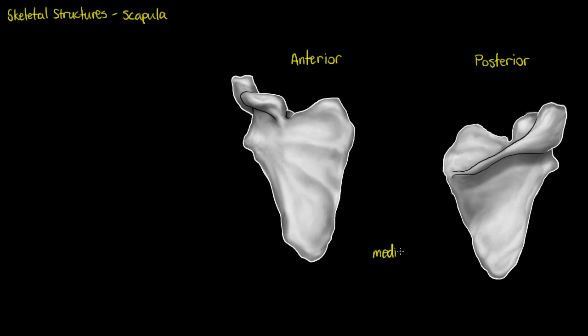In addition to anterior and posterior, medial refers to closer to the midline of the body, and lateral refers to the outer surface. On the lateral side is where we're going to have our shoulder joint. The other name for our scapula is our shoulder blade, which you've probably heard many times before.